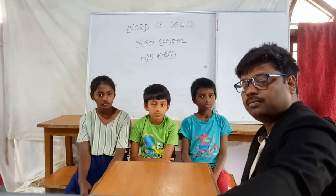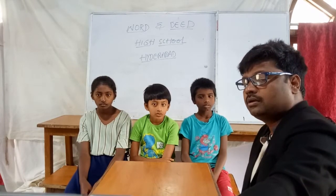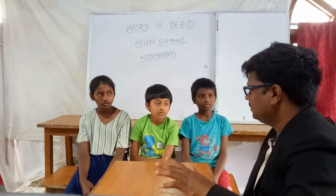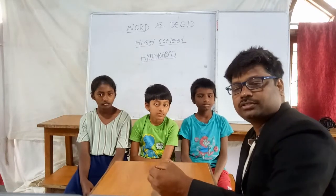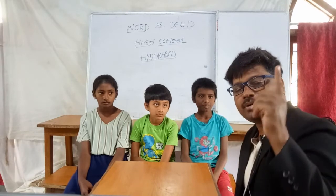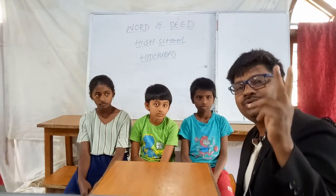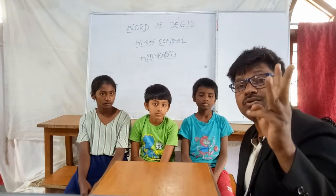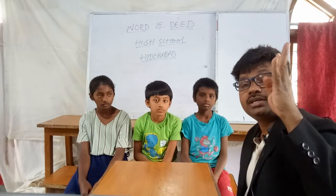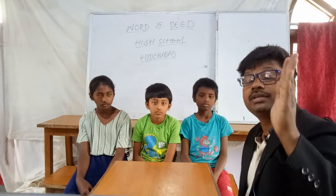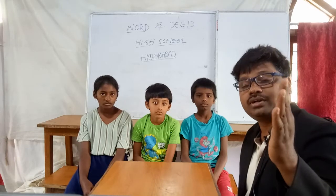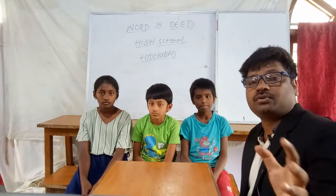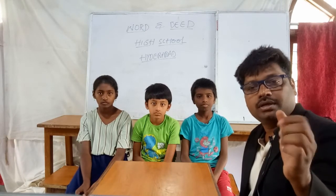Mercury is easily available in pure state. So the properties of mercury are: its expansion is uniform; it is opaque and shiny; it does not stick to the walls of the glass tube; it is a very good conductor of heat; and it is easily available in pure state. This question may be asked in your exam — what are the properties of mercury used in thermometers.